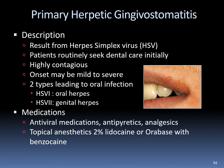Primary herpetic gingivostomatitis is a disease resulting from herpes simplex virus. Patients routinely seek dental care due to the pain involved. The disease is highly contagious and onset can be mild to severe. Two types of oral infections lead to this disease: oral herpes and genital herpes. Medication includes antiviral drugs and analgesics. Over-the-counter medications include topical lidocaine or Orabase.